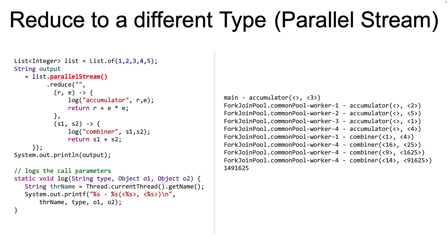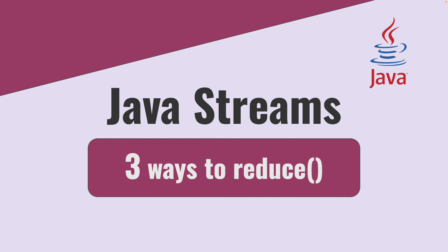Note that the combiner is sometimes not required, specifically for sequential streams, and yet it appears to work — that's because the combiner is never actually called in sequential execution. For more information on the reduce methods, take a look at the Javadoc for the stream interface, which will give you a good amount of information. Hopefully this has given you a good idea of how to use the reduce methods.